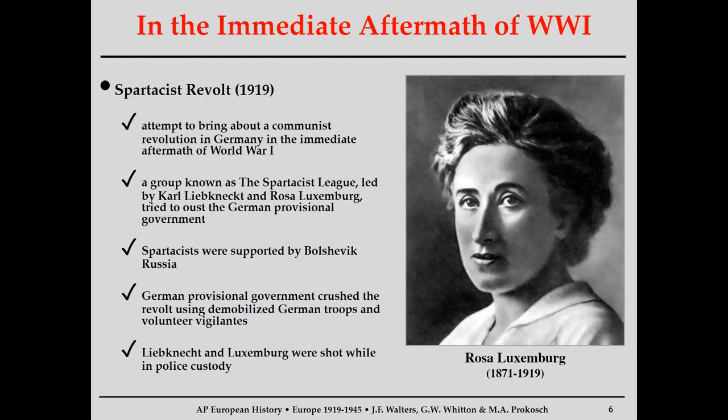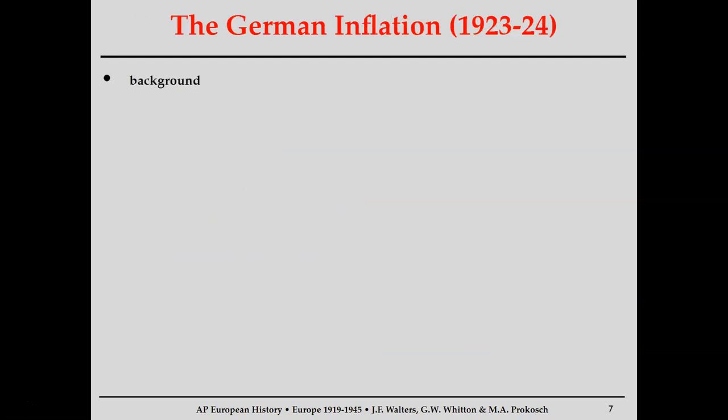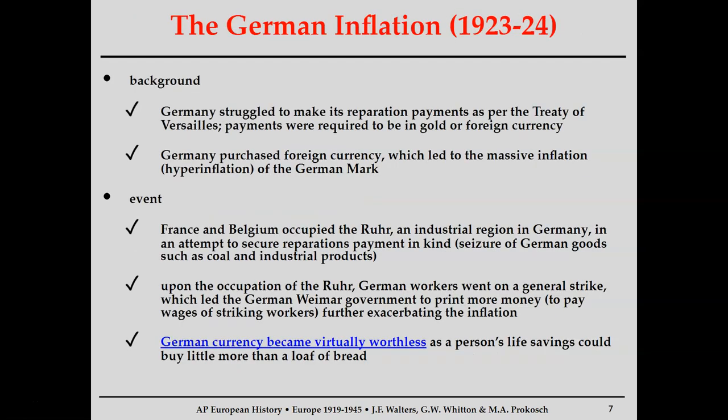We technically already covered this in the aftermath of World War I slides, but briefly: right at the very end of the war when the Treaty of Versailles is negotiated, there is a failed communist uprising in Germany that is repressed by the new German government. The new German government is going to see the 1920s as a period of political and economic instability — that previous rebellion was crushed, but political and economic instability remains a pervasive theme.